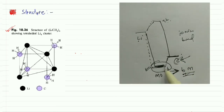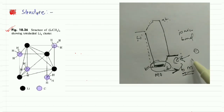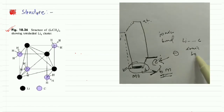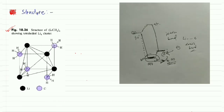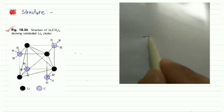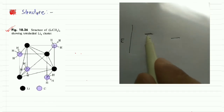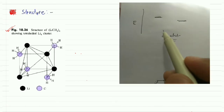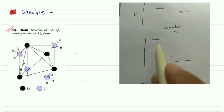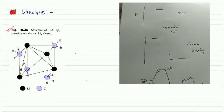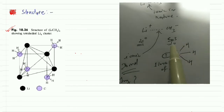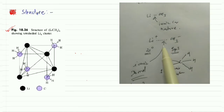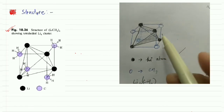Since carbon mainly contributes to the bonding molecular orbital, the electrons are predominantly on carbon — making CH₃ negative and Li positive. This is the molecular orbital explanation of the ionic bond. Always remember: if two atomic orbital energy levels are similar, they form a covalent bond; if the energy difference is very large, they form an ionic bond.